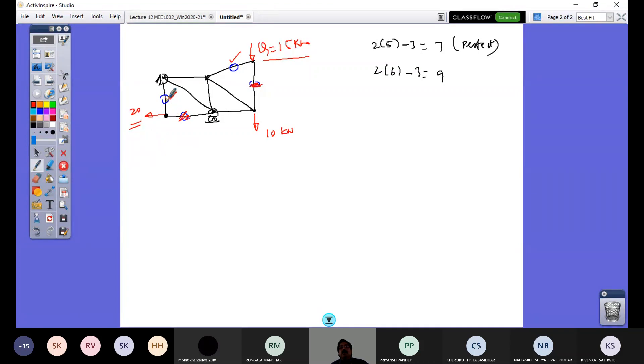So this zero force will again disappear if I have here a load which is acting also vertically down. This would become a non-zero force member. So this is how you can identify, so any given truss, you can identify the zero force members.